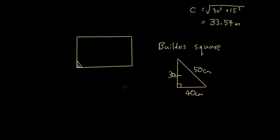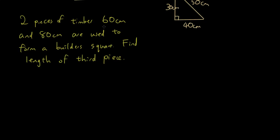So let's do a problem to do with the builder square. The question is: two pieces of timber, 60 centimeters and 80 centimeters, are used to form a builder square. Find the length of the third piece.